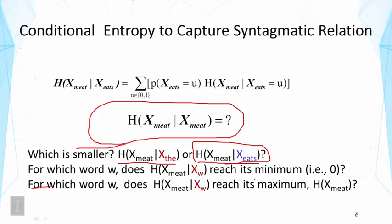When W is the same as 'meat', the conditional entropy reaches its minimum of zero. For what kind of words does it reach its maximum? That's when W is not really related to 'meat' — like 'the', for example — and the conditional entropy is very close to the maximum, which is the entropy of 'meat' itself.